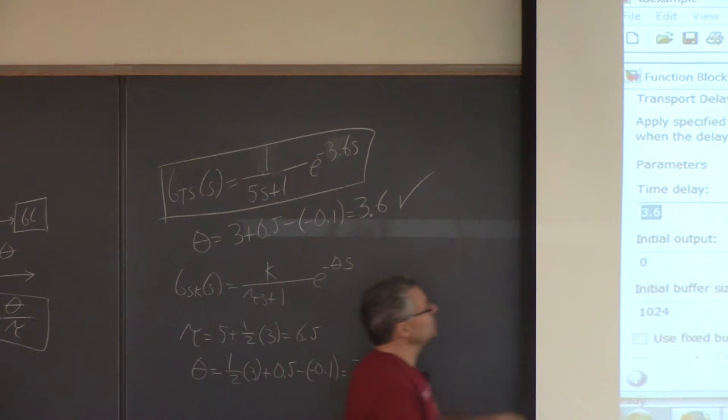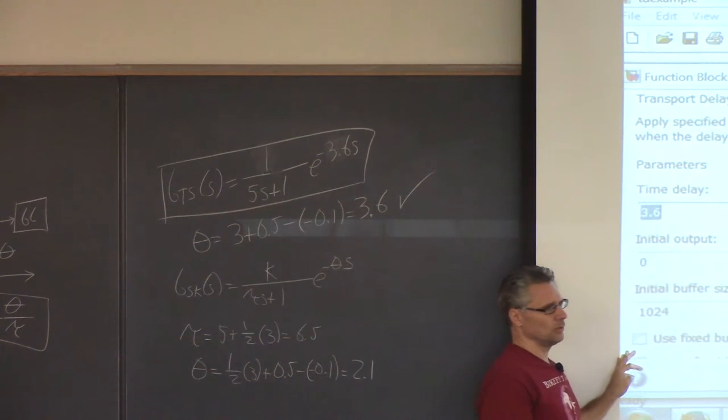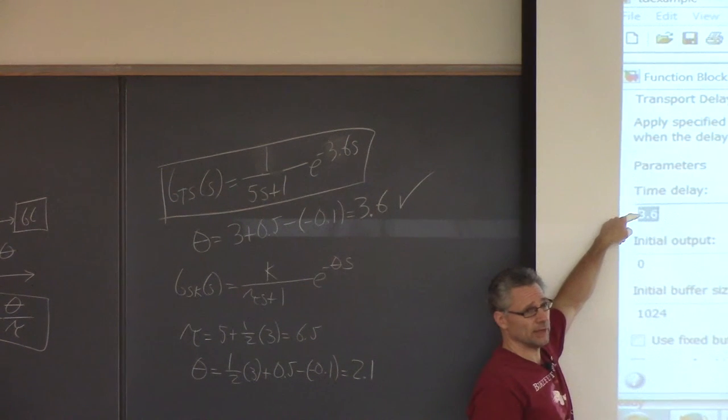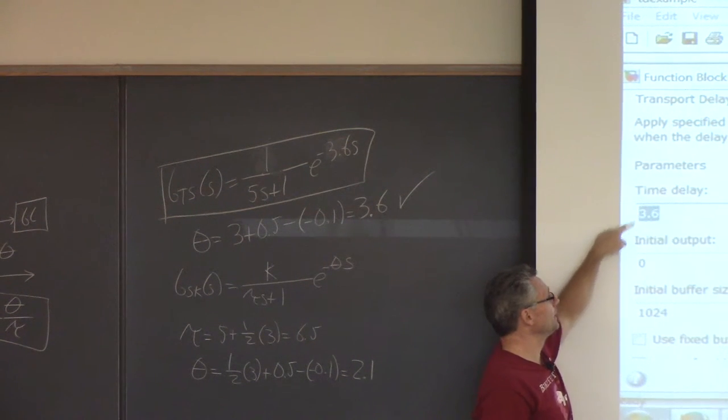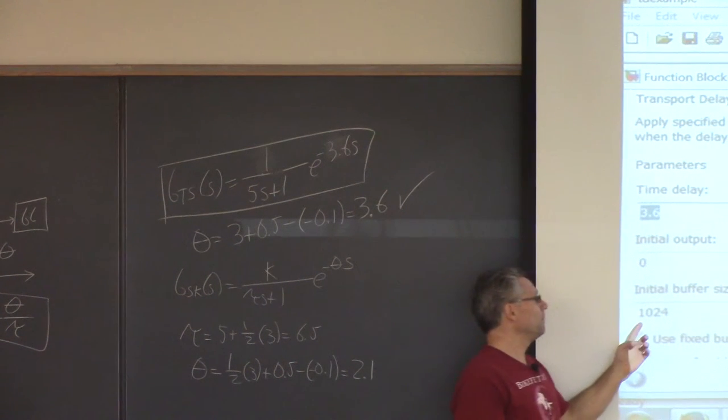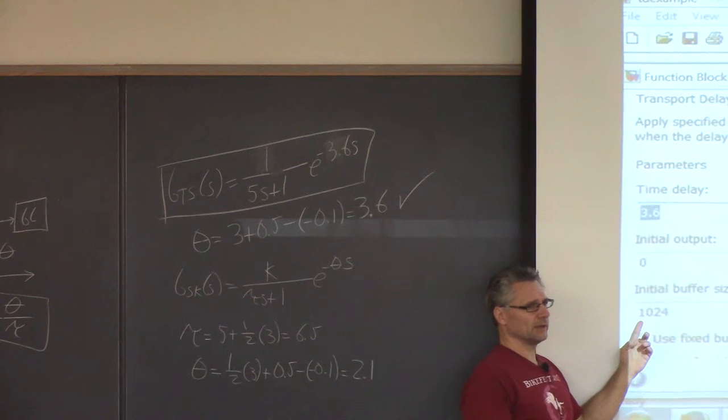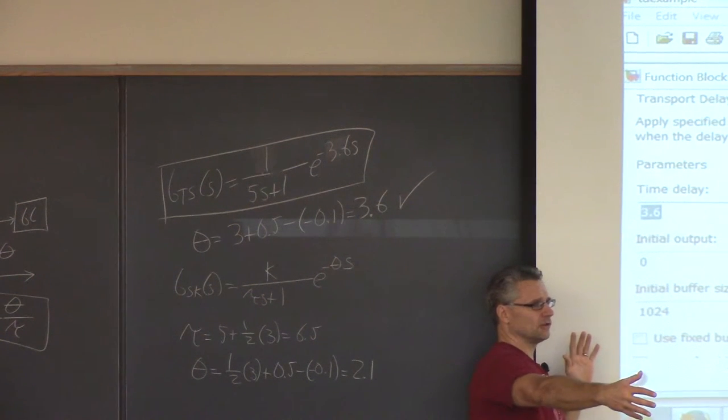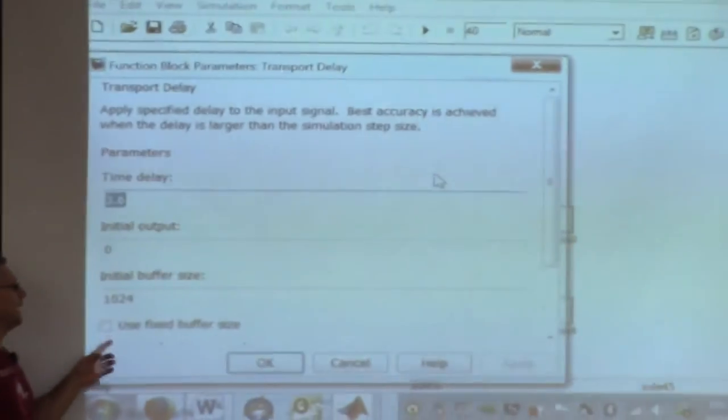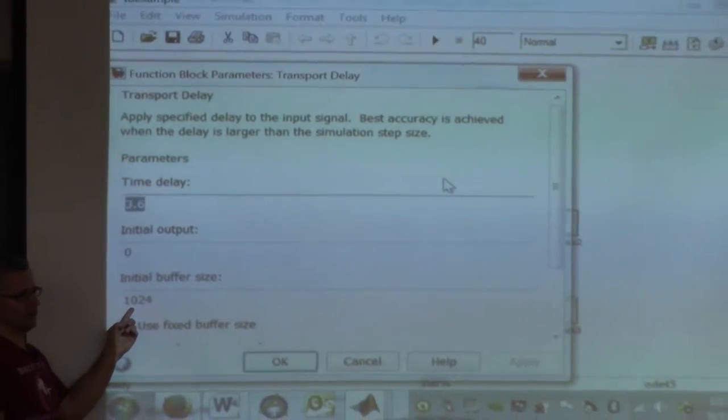What's typical in Simulink, it asks you for a lot of things that you don't know the answer to. Hopefully you know the answer to the first one. What's the value of the time delay, 3.6. Then it says, what's the initial output? It'll default to zero, that's the right answer. What's the buffer size? You'll be like, what's the buffer size? That just means how many values is it going to store? Because if you have a time delay, you have to store values from the past, right?